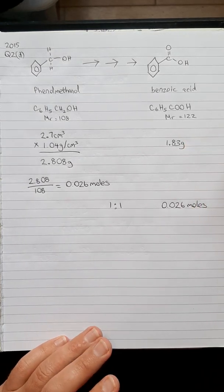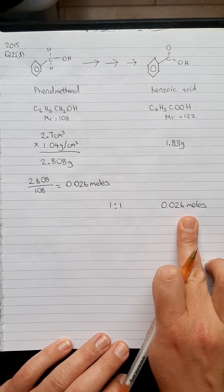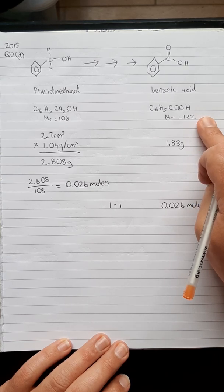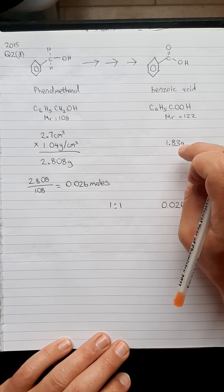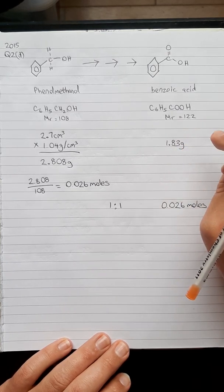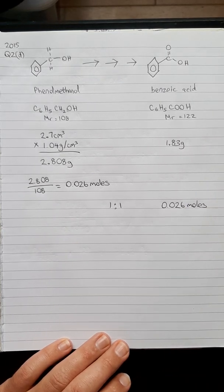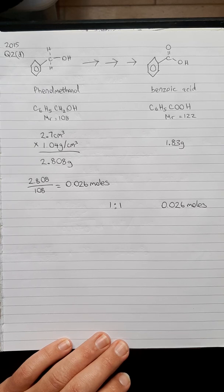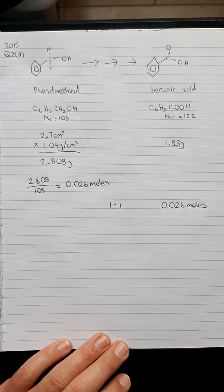Now a couple of ways you can do this: you can either multiply the moles by the MR to get the number of grams you would expect, or you can divide the grams by the MR to find out the number of moles you actually got. The question says assuming that phenylmethanol was the limiting reactant, calculate percentage yield of the benzoic acid.